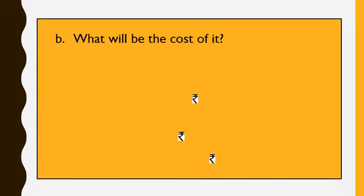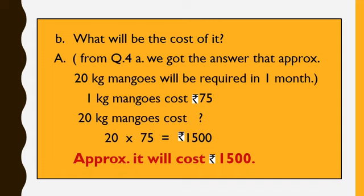Our next question is: what will be the cost of all these mangoes? We have seen from the previous slide that 20 kg mangoes will be required in 1 month. We also know that 1 kg mangoes cost Rs.75. So what will be the cost of 20 kg mangoes? We will cross multiply 20 and 75. So 20 seventy-fives are Rs.1500, and then divide it by 1. So 1500 divided by 1 is 1500. So approximately all the mangoes will cost Rs.1500.